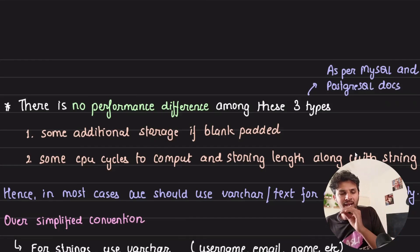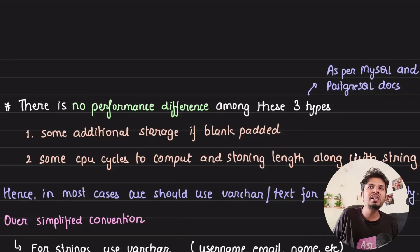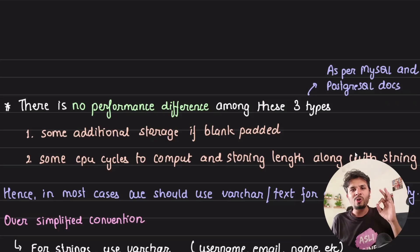As per MySQL and Postgres documentation, there are no performance differences among these three types: char, varchar, and text. It's just that char might take some additional storage because of blank padding. Then you might require some CPU cycles for storing the length along with the string and processing it with varchar and text, but it's negligible. So hence in most cases, you see people gravitating from varchar to text for greater flexibility because now you are not limiting to certain n in case of varchar.